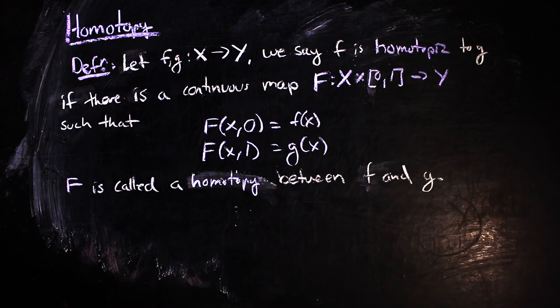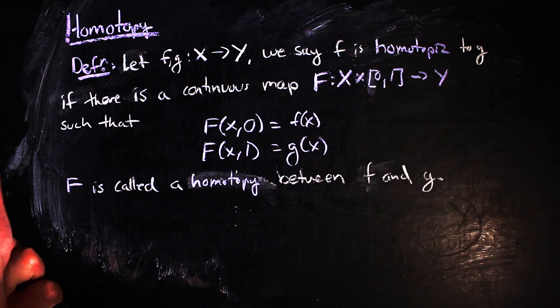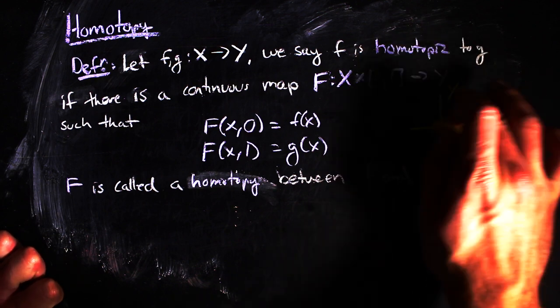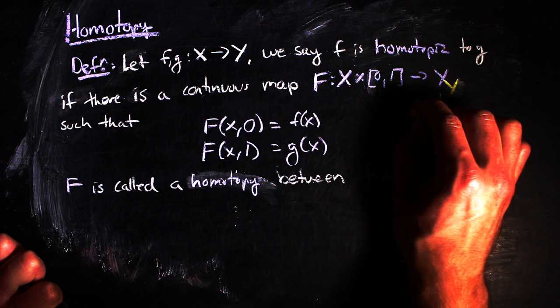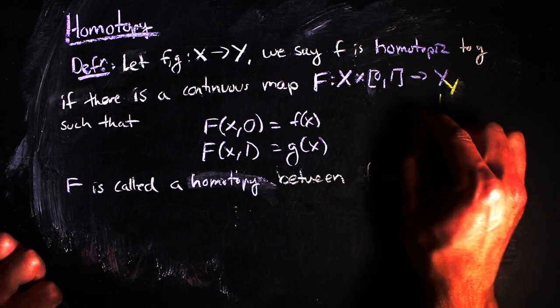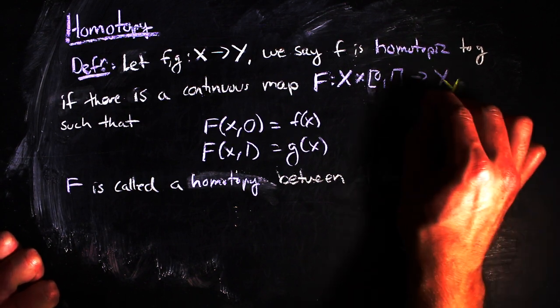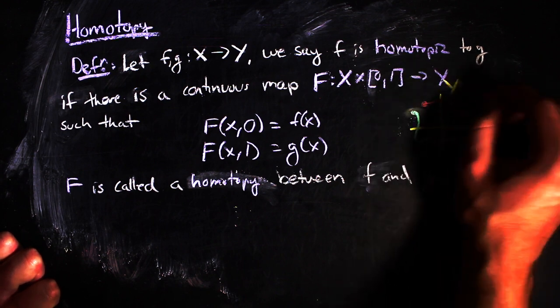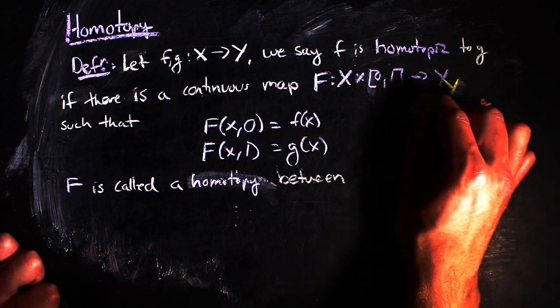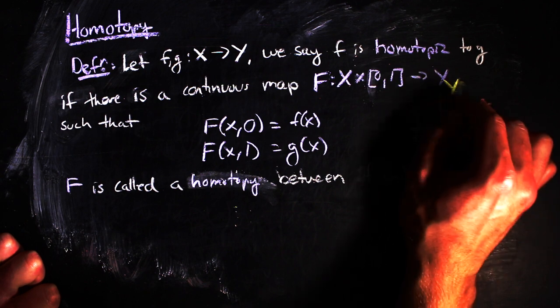Essentially, what's going on here is that we have some curve that corresponds to f of x in the Cartesian plane given by our space x times our space y. And with the homotopy, we can deform it continuously to get some curve g of x if f and g are homotopic, that is.